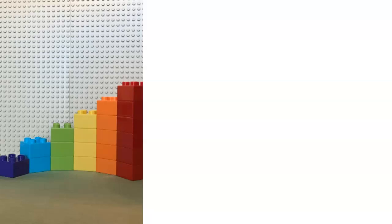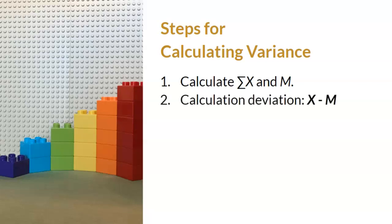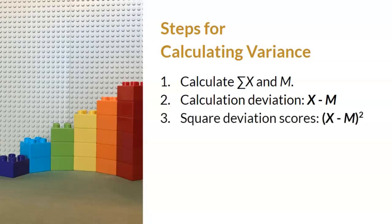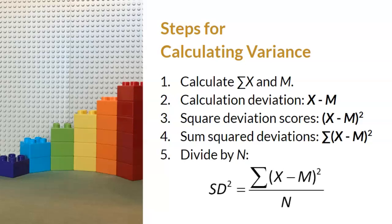I would like to summarize the steps in calculating variance. Step 1: calculate the sum of x and the mean for the sample. Step 2: calculate the deviation scores. Recall that when we add these deviation scores, we always get a sum of 0. To get rid of the negative scores, we move to step 3: square the deviation scores. Step 4: sum the squared deviation scores. And step 5: divide by n. When you put all those steps together, you have the formula for variance.